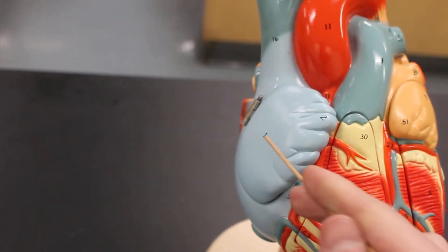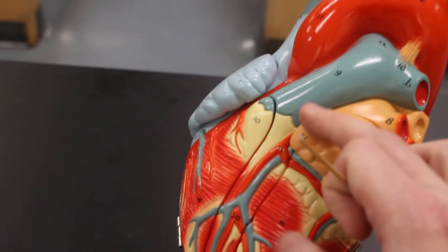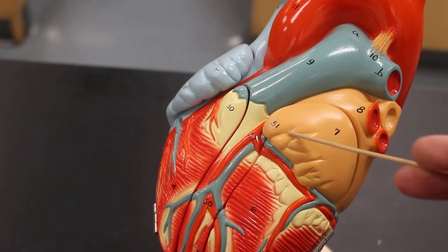We have the right atrium with the right auricle. This wrinkly bit. We have the left atrium with the left auricle.